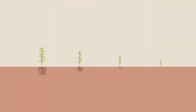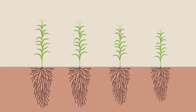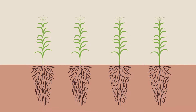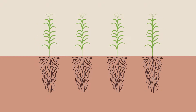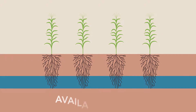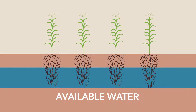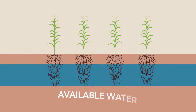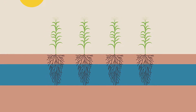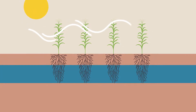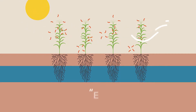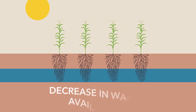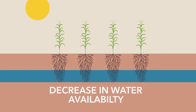Here's how the Soil Water Balance Irrigation Scheduling Method works. Your crop begins each day with a starting water balance available in its root zone. As the crop uses water throughout the day — referred to as evapotranspiration, or ET — the available water balance decreases.